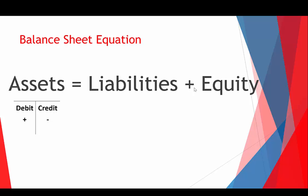Assets are said to have a debit balance, so anytime you increase an asset you would debit it, and anytime you decrease an asset you would credit it. On the opposite side of the equation, liabilities have a credit balance — they increase on the credit side. So if you take out more debt, you increase the credit for liabilities and increase the cash on the asset side. Equity follows the exact same pattern as liabilities.